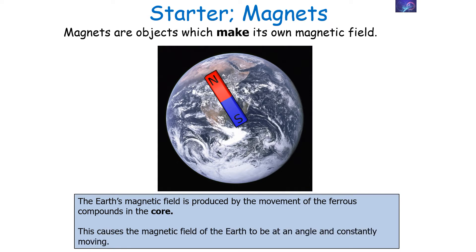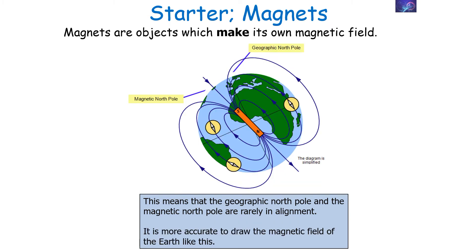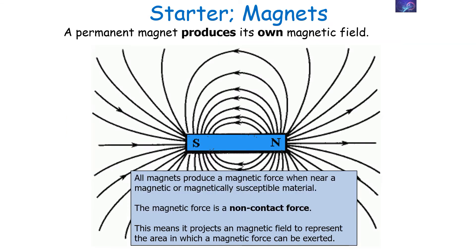Because the magnetic field is due to the movement of the core, this causes the magnetic fields of the earth to be at an angle and constantly moving. This means that in reality the geographic north pole and magnetic north pole are rarely in alignment. Geographic north pole tends to be found in Greenland whilst magnetic north pole tends to be found in Canada — they are not in the exact same position. So a permanent magnet produces its own magnetic field, and all magnets produce a magnetic force which acts near a magnet or magnetically susceptible material. The magnetic force is a non-contact force.